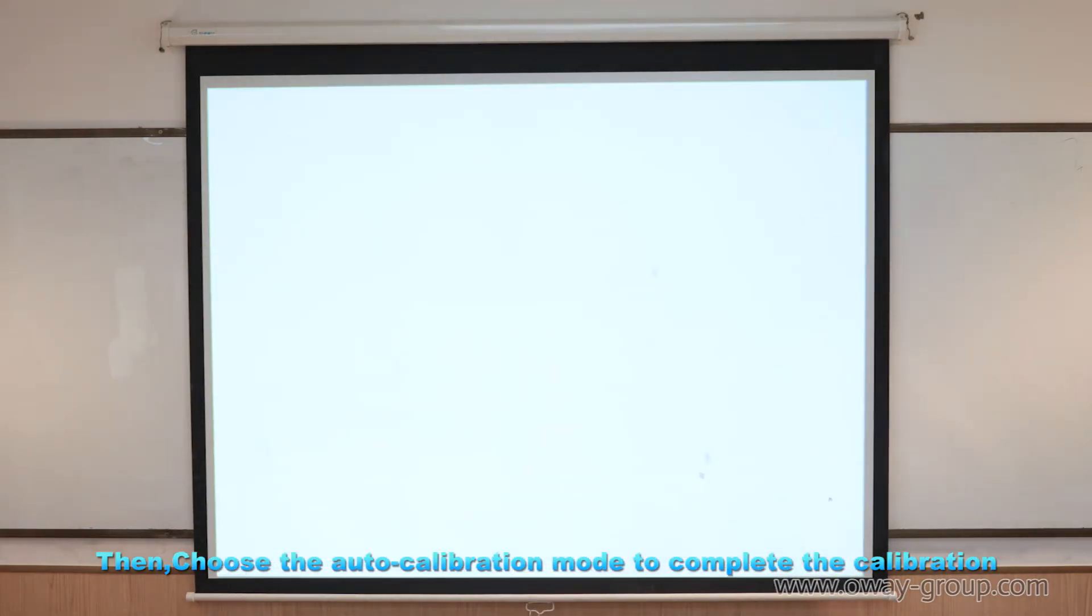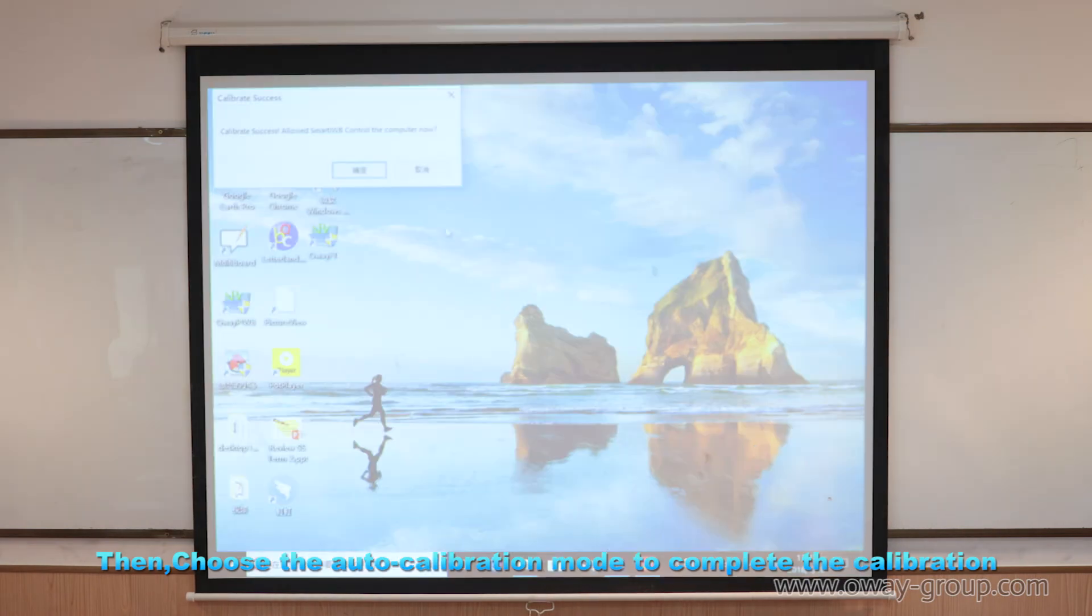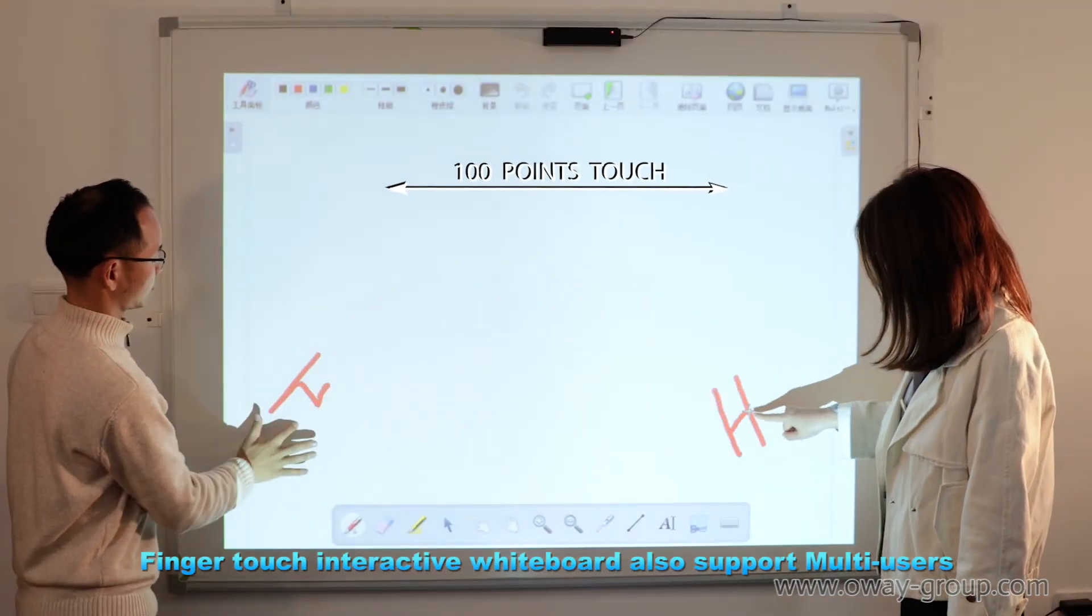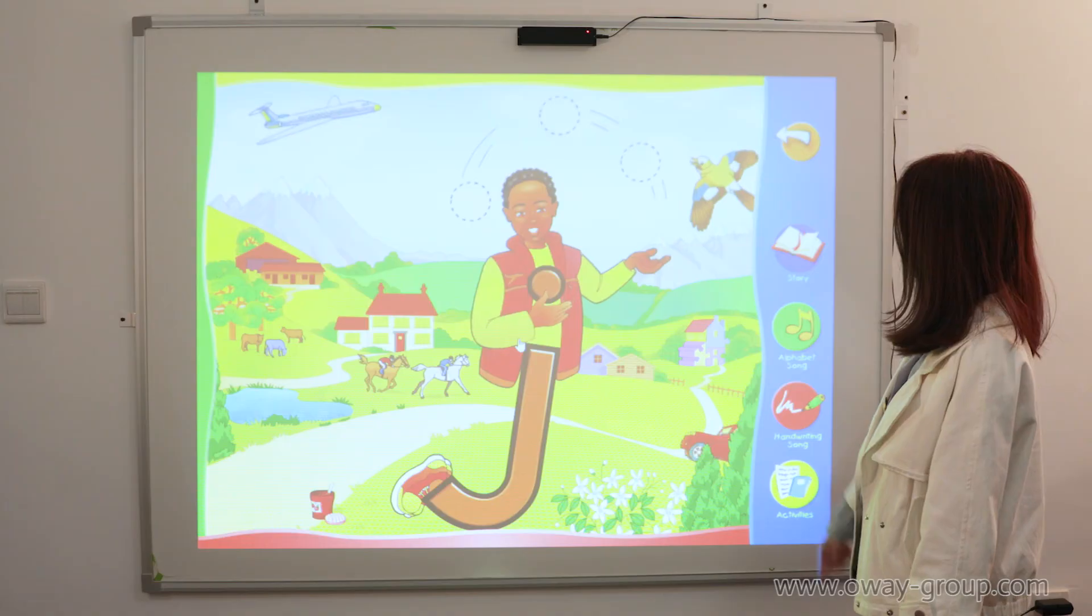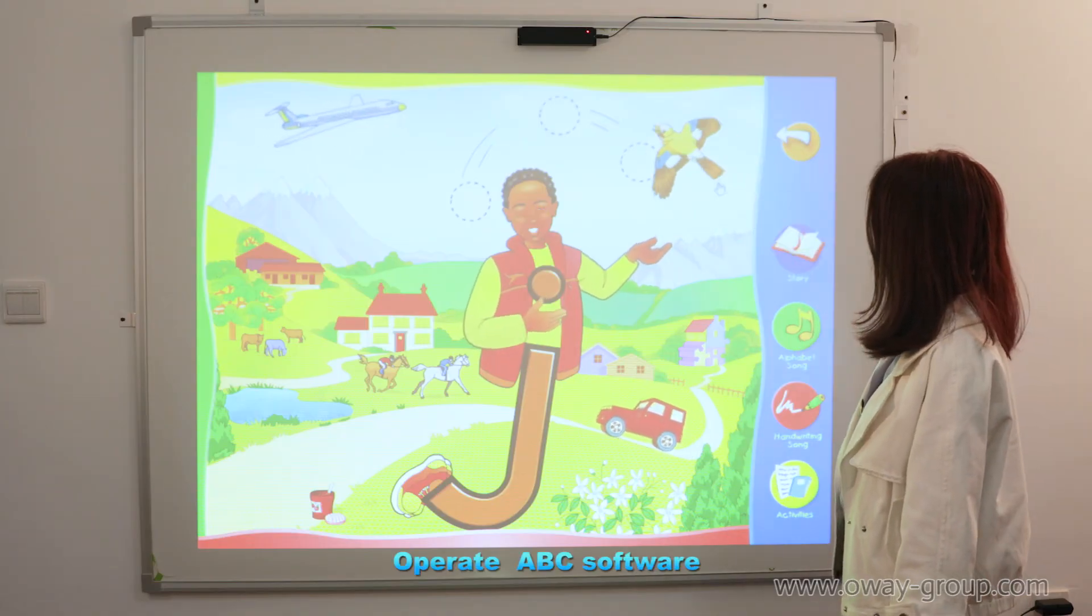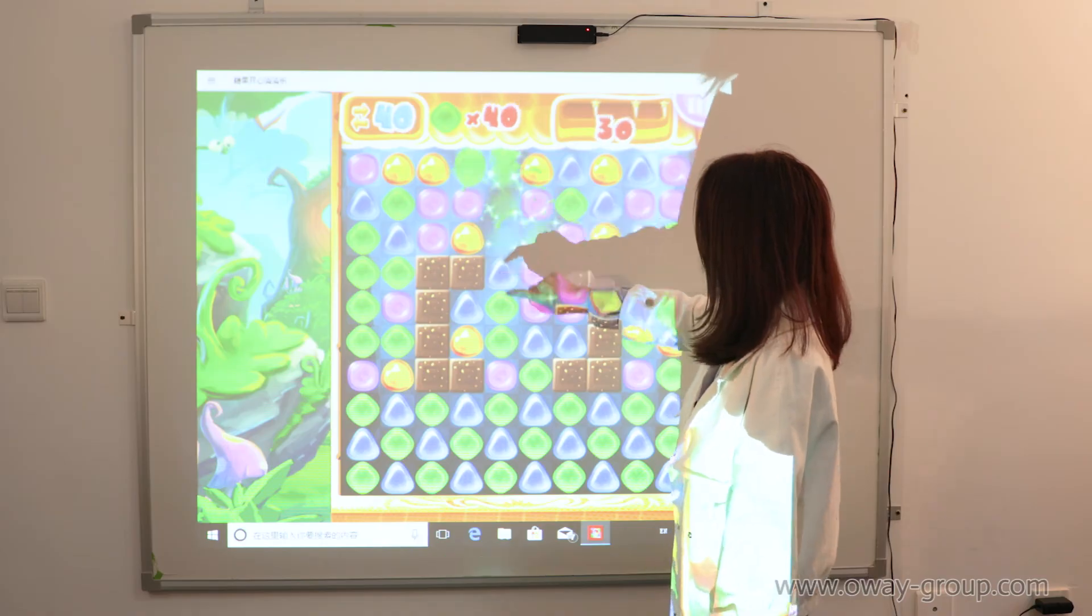Then choose the Auto-Calibration mode to complete the calibration. FingerTouch Interactive Whiteboard also supports multi-users, operate ABC software and play games. Very well.